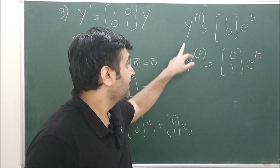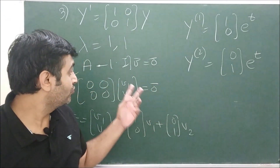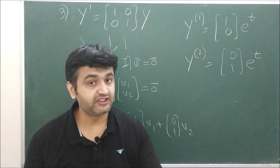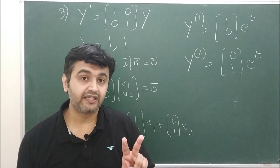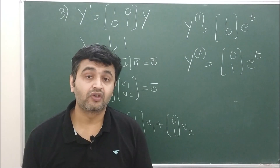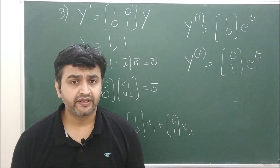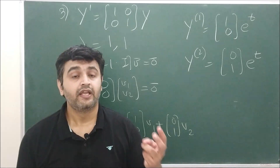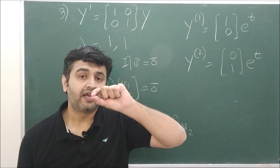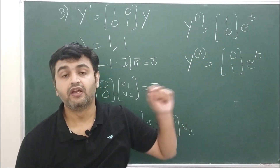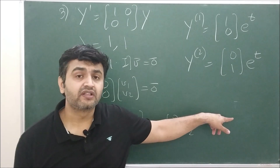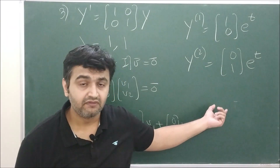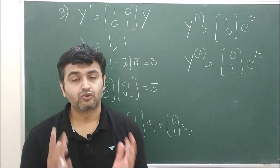So y1 = [1, 0]ᵀ·e^t and y2 = [0, 1]ᵀ·e^t, and the general solution is c1·y1 + c2·y2. To summarize all 2×2 cases: (1) two distinct eigenvalues — you always get two linearly independent eigenvectors, done; (2) repeated eigenvalues with two linearly independent eigenvectors — done; (3) repeated eigenvalues with only one eigenvector — find the generalized eigenvector and use y2 = t·y1 + ū·e^(λt). These are all the 2×2 possibilities.